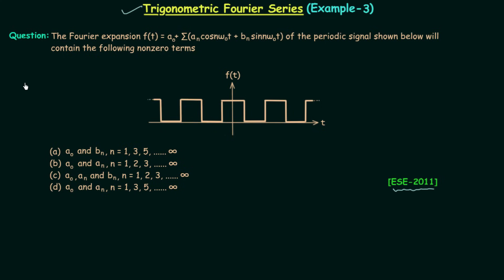We will first read the question and then we will move to the solution. The Fourier expansion ft equal to a0 plus summation an cos plus bn sin of the periodic signal shown below will contain the following nonzero terms.